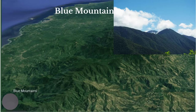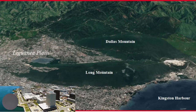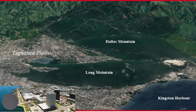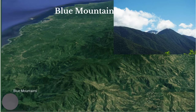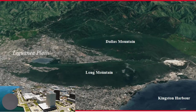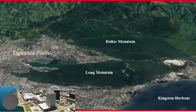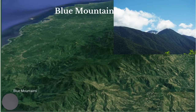Among the factors influencing population distribution is relief. Relief describes the height, shape, and gradient of the land. Flat to gentle lowland areas are generally preferred for settlement. Most towns in Jamaica, with the exception of Mandeville, are built on low flatlands, and these towns have the largest population.